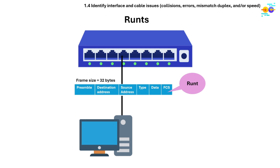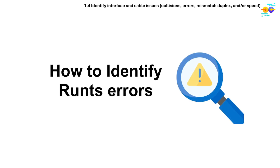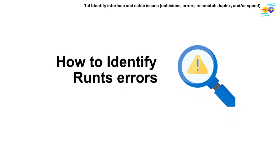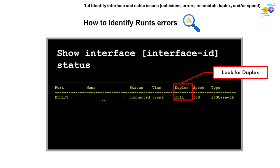A runt is a frame smaller than the minimum Ethernet frame size — less than 64 bytes — but with a valid CRC. Causes of runts include collisions in half-duplex networks, duplex mismatch between devices, or faulty hardware. To identify runt errors, use the show interface command and look for the runt counter. Runts often indicate a duplex mismatch, so always verify duplex settings using the command show interface [interface-id] status.